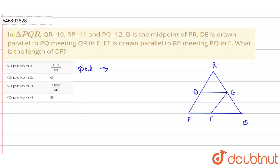Hello everyone, the problem is: we have a triangle PQR with sides given. D is the midpoint of PR, DE is drawn parallel to QR meeting at E, EF is drawn parallel to PR meeting PQ at F. What is the length of DF? We have to calculate DF. Let's start the solution.